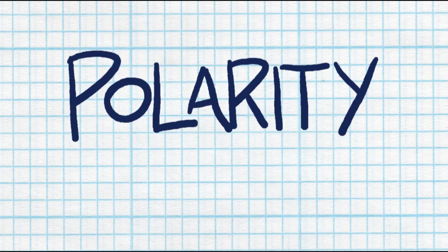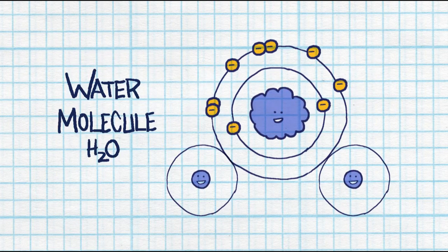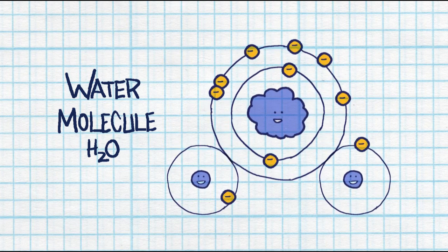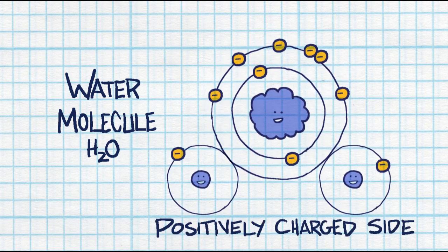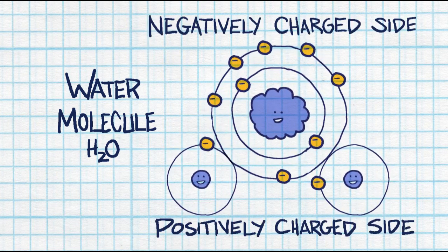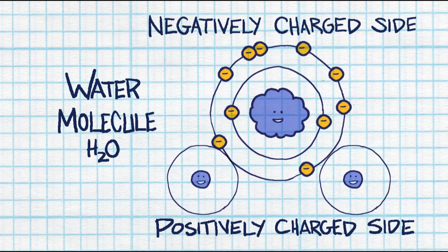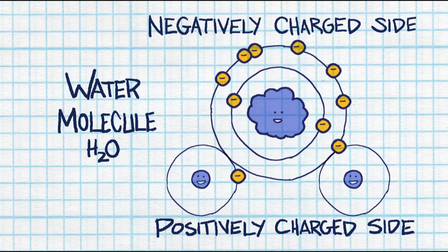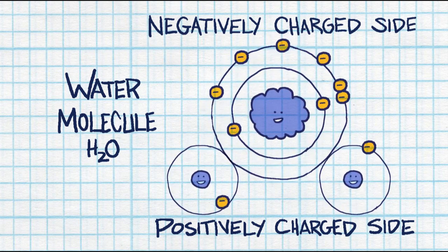Finally, the last thing you need to know from Chapter 3, Section 1, is polarity. There are certain molecules that are actually polar, meaning that they have one section that's positively charged and one section that's negatively charged. This happens because the electrons are actually all grouped together up towards the top. A perfect example of this would be a water molecule.